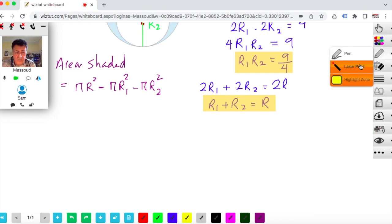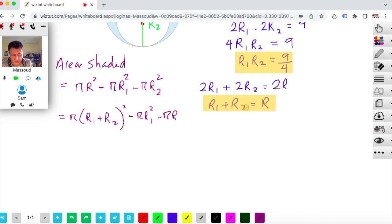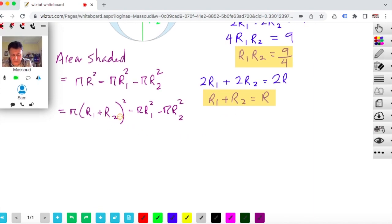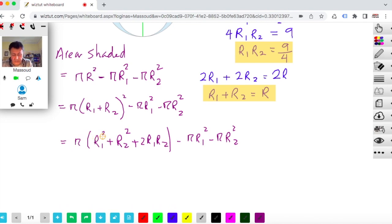Now, so if I now replace this R with this, I would get pi times (R1 plus R2) squared minus pi R1 squared minus pi R2 squared. So if we expand this bracket, you'll see that you would get pi multiplied by R1 squared plus R2 squared plus 2R1 R2. So I've just expanded the bracket minus pi R1 squared minus pi R2 squared. So if we bring this pi in, you will see that you get pi R1 squared plus pi R2 squared plus 2pi R1 R2 minus pi R1 squared minus pi R2 squared.